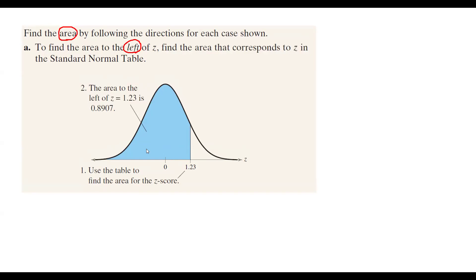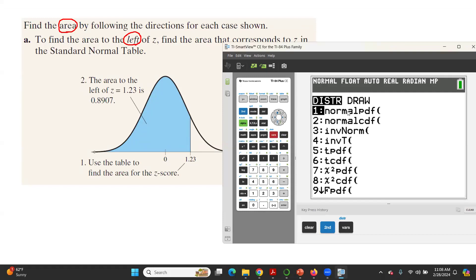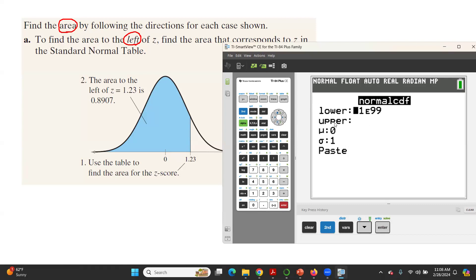Click on Second, then VARS, and find normalcdf — your cursor must be at option 2, which is normalcdf. The area is on the left-hand side of 1.23. On the left-hand side you have zero, some negative numbers, and it continues further left with negative values.